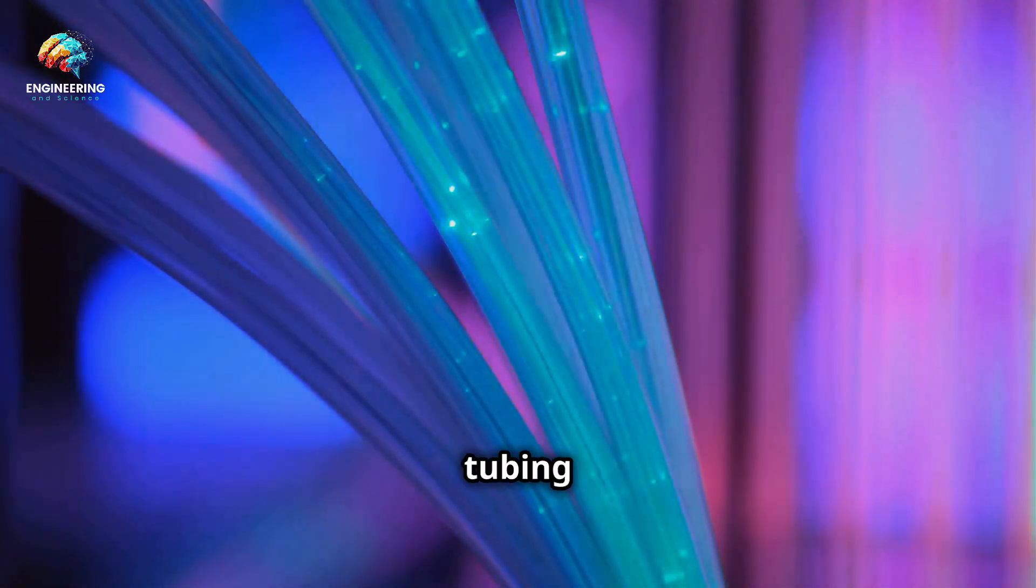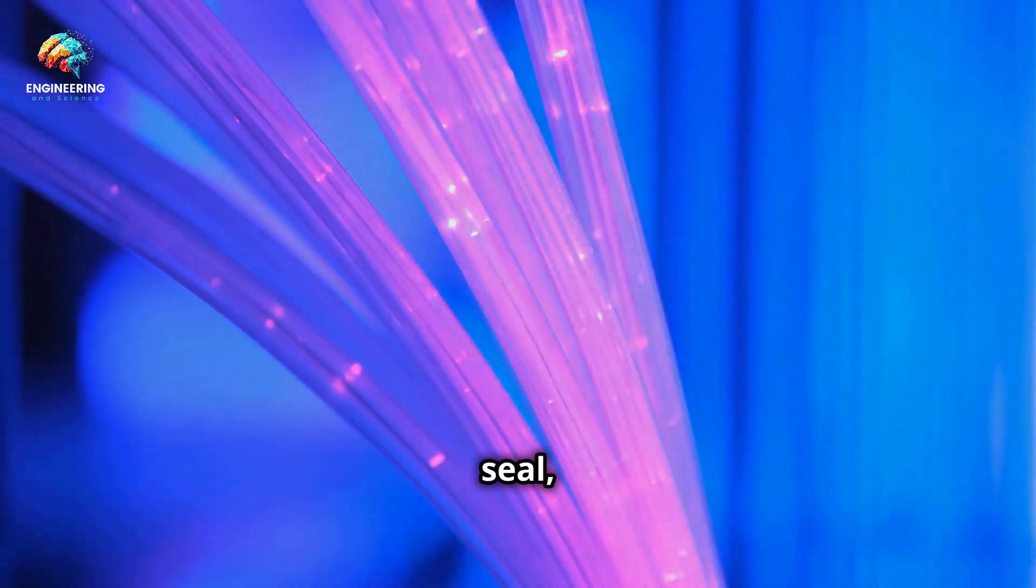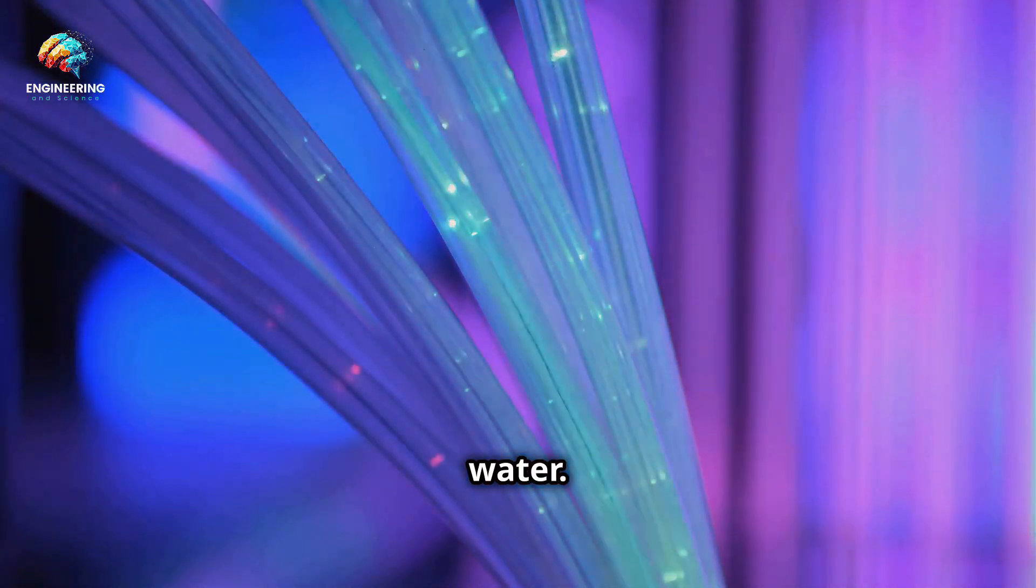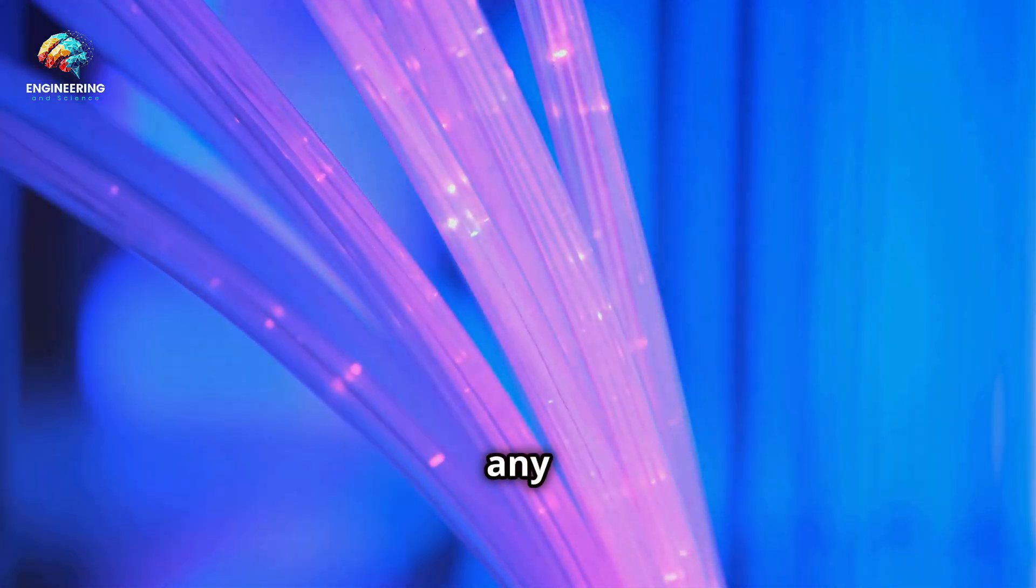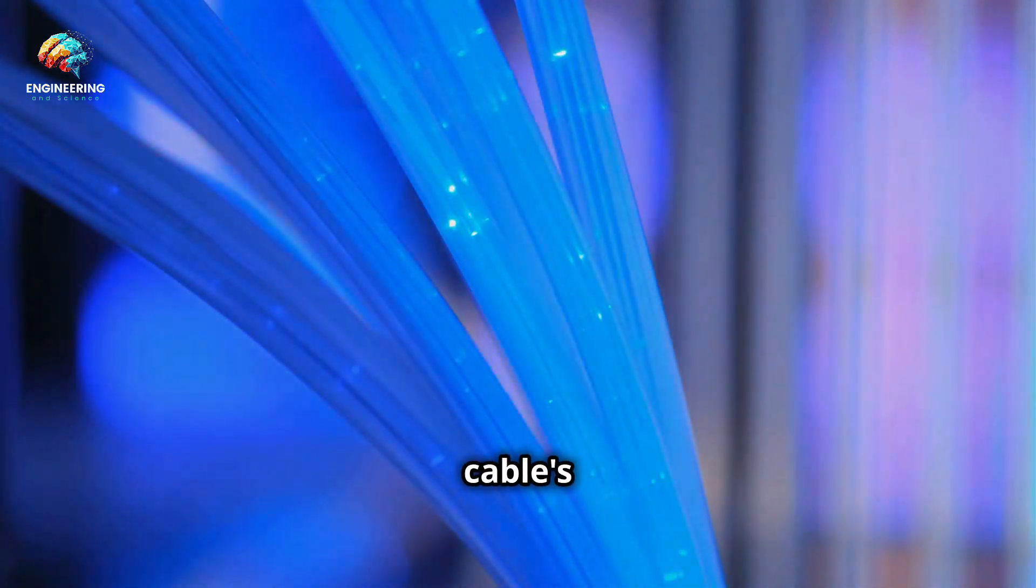Copper or aluminum tubing provides a hermetic seal, protecting the fibres from the ingress of water. This seal is vital to prevent any moisture from compromising the cables' functionality.